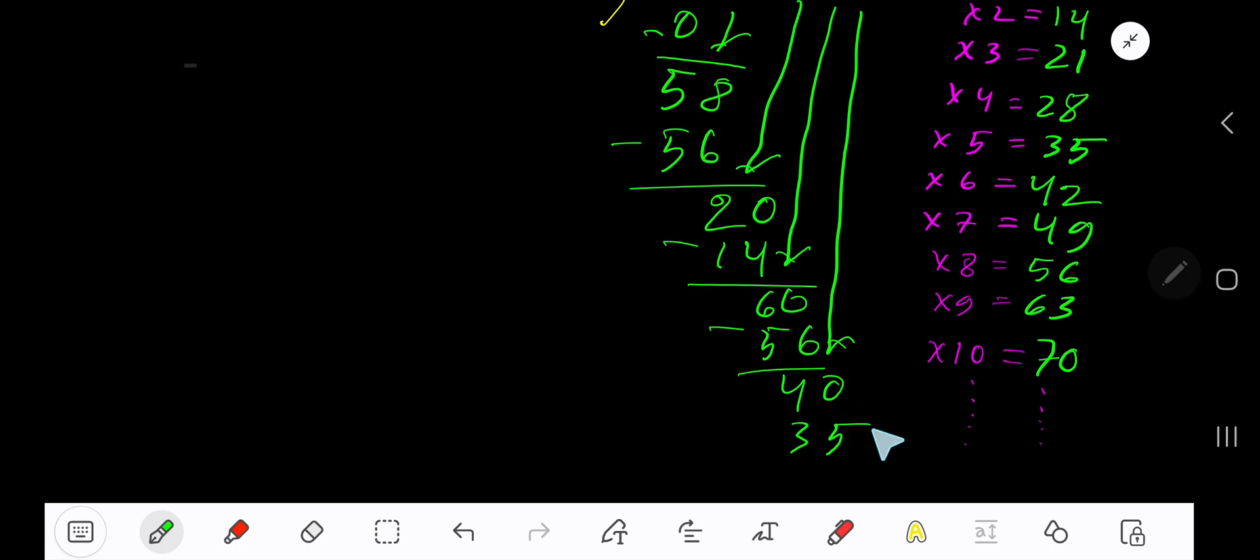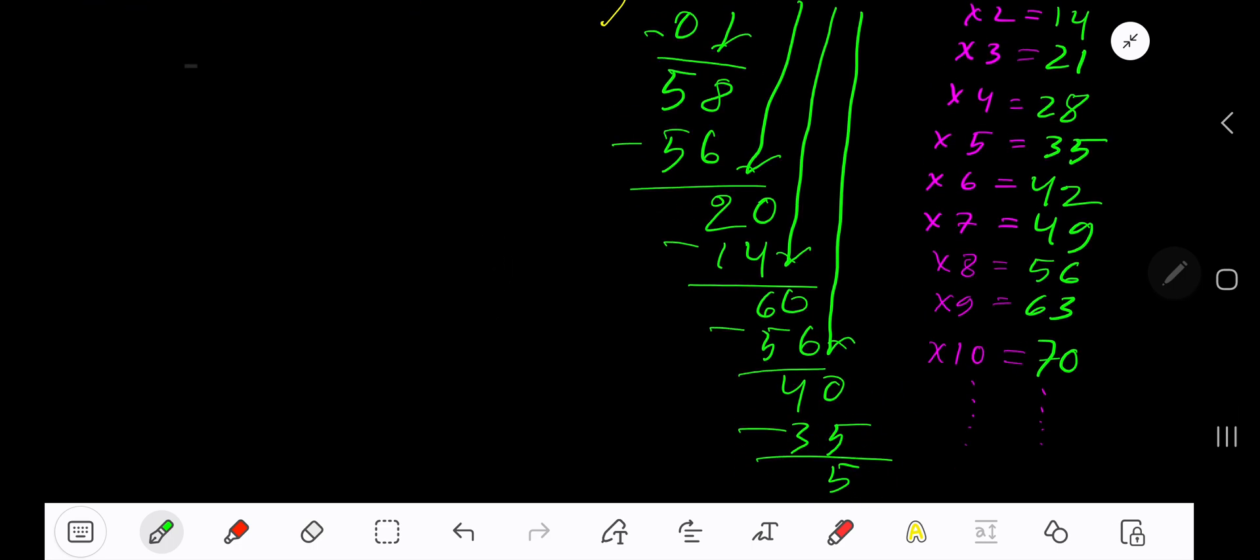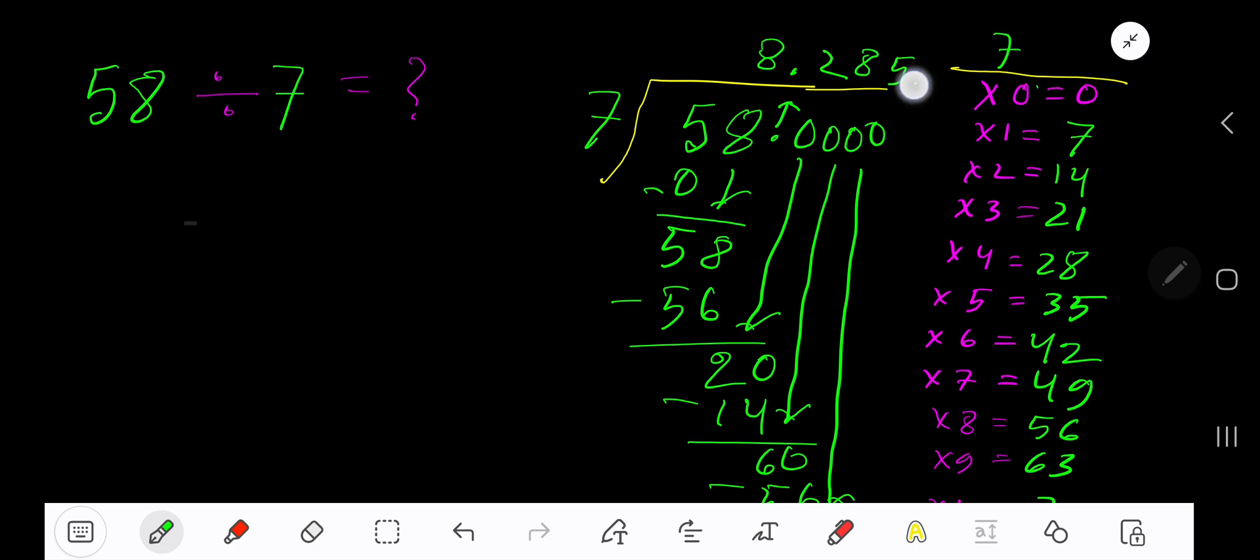You can bring down more zeros, but since we have three places after the decimal, the answer is 8.285 repeating.